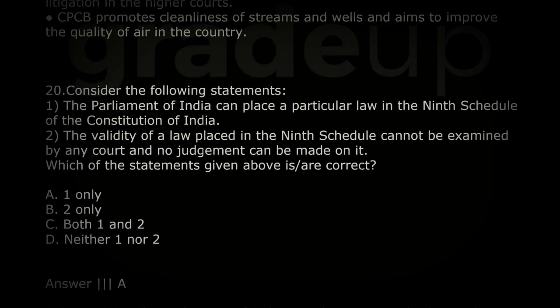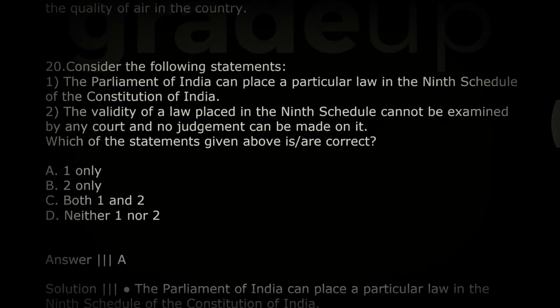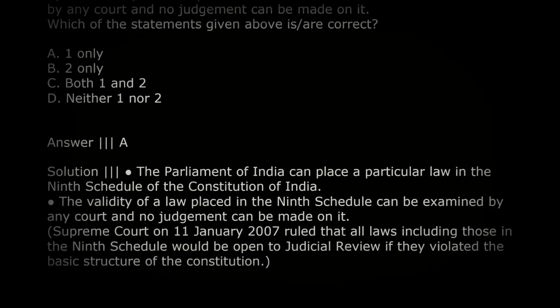Parliament of India can place a particular law in the Ninth Schedule of the Constitution — that is absolutely correct. But the statement that validity of a law placed in the Ninth Schedule cannot be examined by any court is wrong. The Supreme Court ruled on 11 January 2007 that all laws, including those in the Ninth Schedule, are open to judicial review if they violate the basic structure of the Constitution — as laid down in the Kesavananda Bharati case.